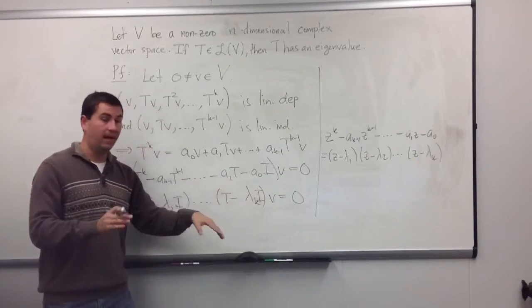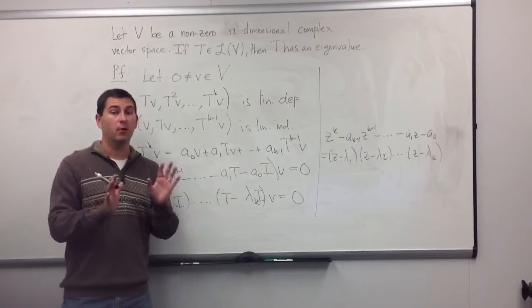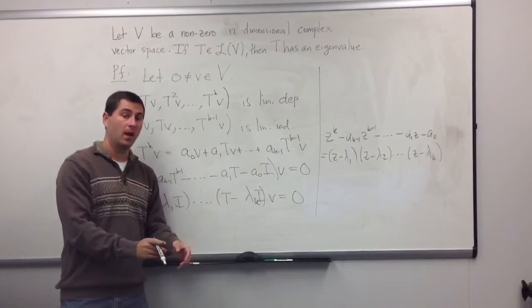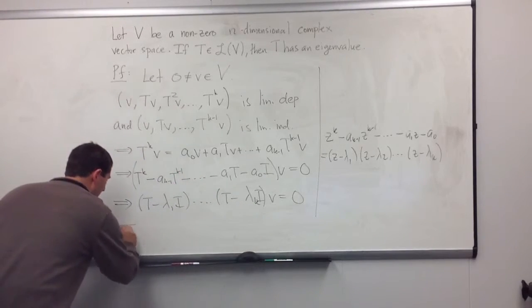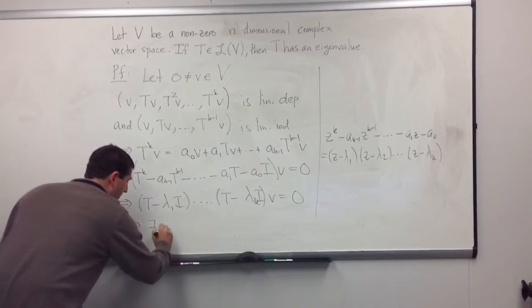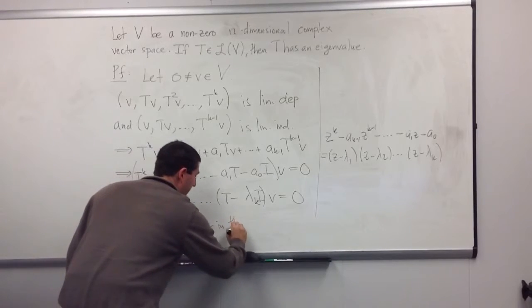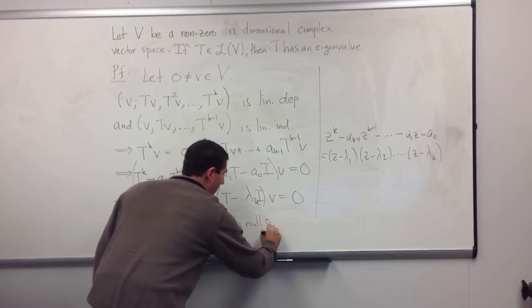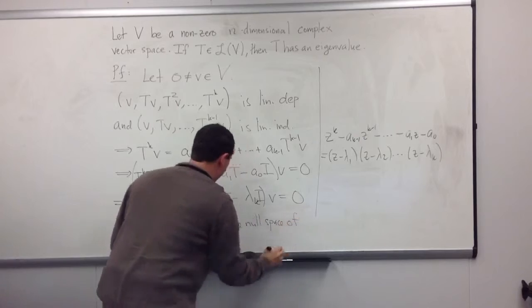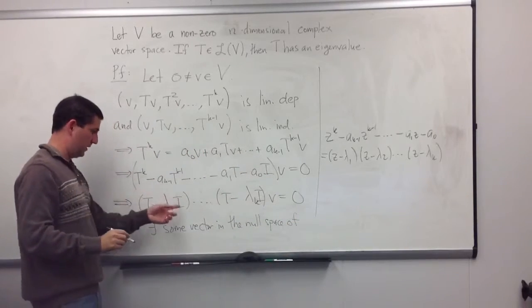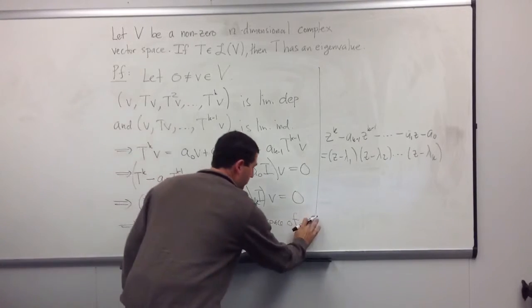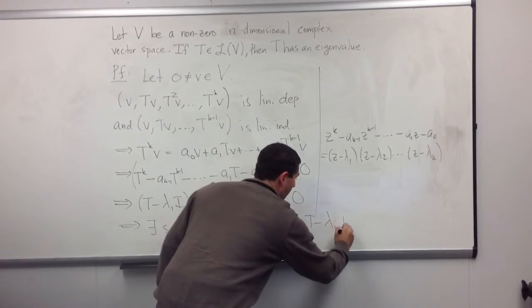one of these T minus λ something times I's is going to spit out 0. And that tells me that there exists some vector in the null space of one of these operators.